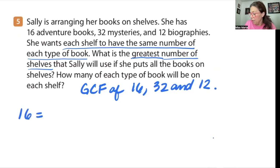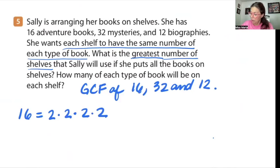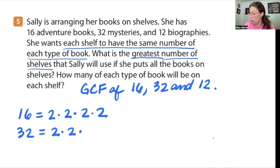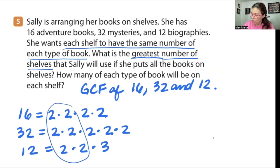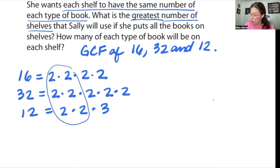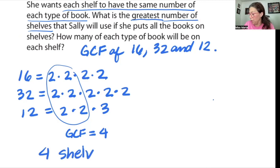16 is two times two times two times two. Two times two is four, times two is eight, times two is 16. Now 32 is two times 16, so it's everything in 16 times one more two: two times two times two times two times two. And 12 has a three in there: two times two times three, since 12 is two times six and six is two times three. The greatest common factor is four, so we have four shelves.